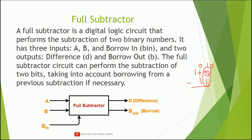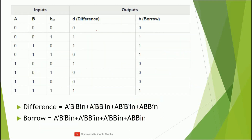We take a borrow so zero becomes ten (binary), giving ten minus one which equals one. But then we have zero again, so we take another borrow: zero becomes ten, and ten minus one is one. This activity can only be performed using a full subtractor — the subtraction of two bits where a borrow has already been given. A and B are the two inputs; B_in is the borrow already given to the previous term; the outputs are difference and a new borrow.